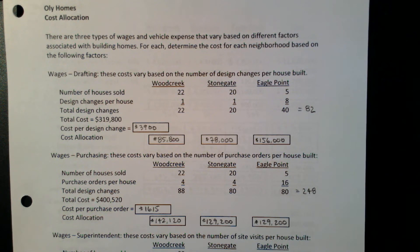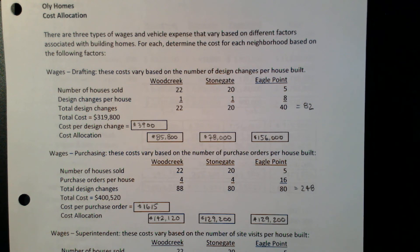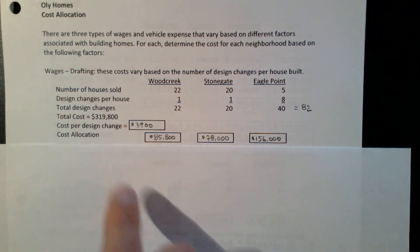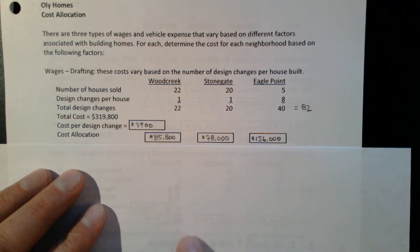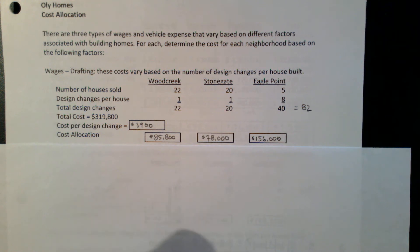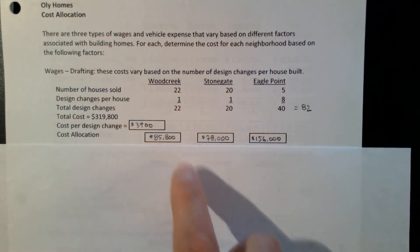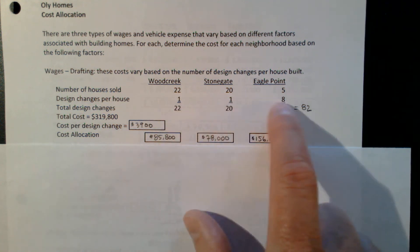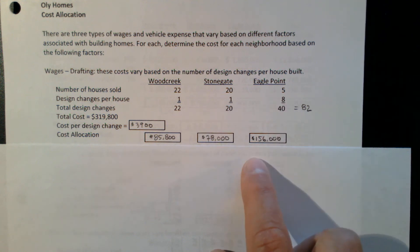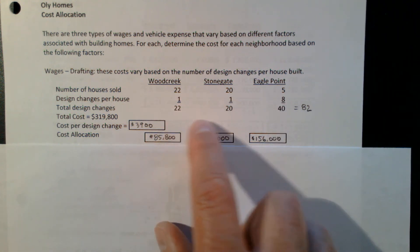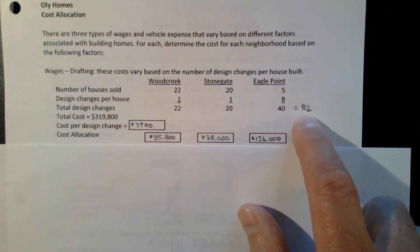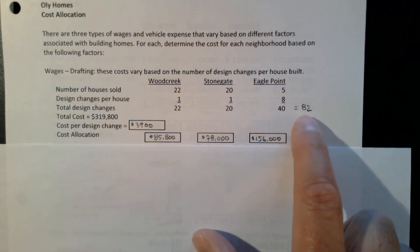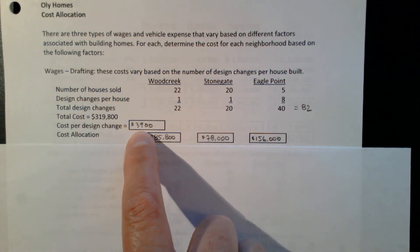I look at the different types of wages and vehicle expense, and those are activities I can look at associated with different neighborhoods. For drafting, it's based on the number of changes made to a house. We have standard plans and only need drafting resources when we deviate from those. I have the number of houses sold in each of three neighborhoods and how many changes were required. Eagle Point customers do an awful lot of customization — 22, 20, and 40 design changes for a total of 82. Using activity-based costing, I take the total cost divided by 82 changes and get $3,900 per design change, which I can then apply to each neighborhood.